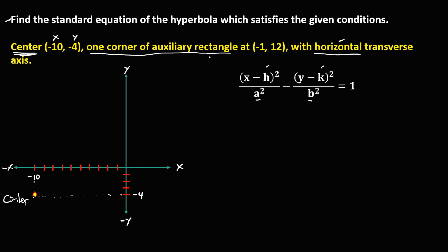For the one corner of the auxiliary rectangle, x is negative 1 and y is positive 12. We connect these to find that point. Then we create a rectangle connected with the center and this one corner of the auxiliary rectangle. The points aligned with the center and this corner are the co-vertex and the vertex.